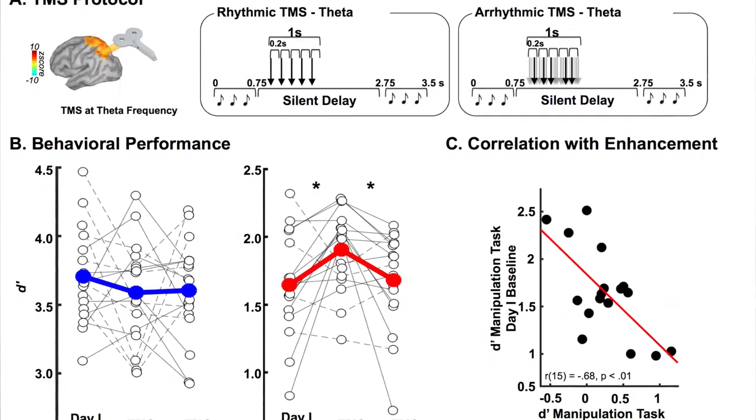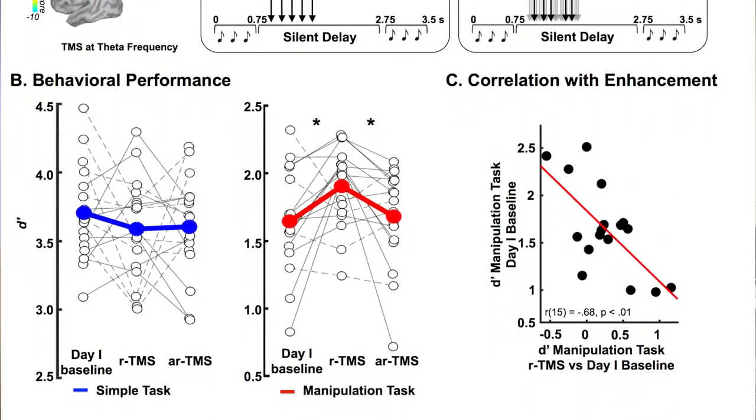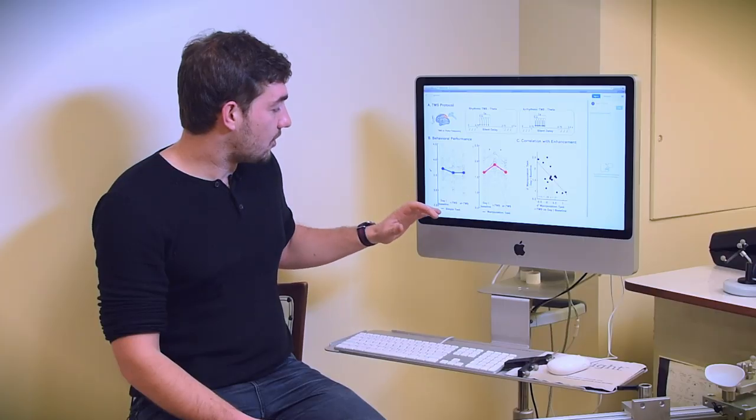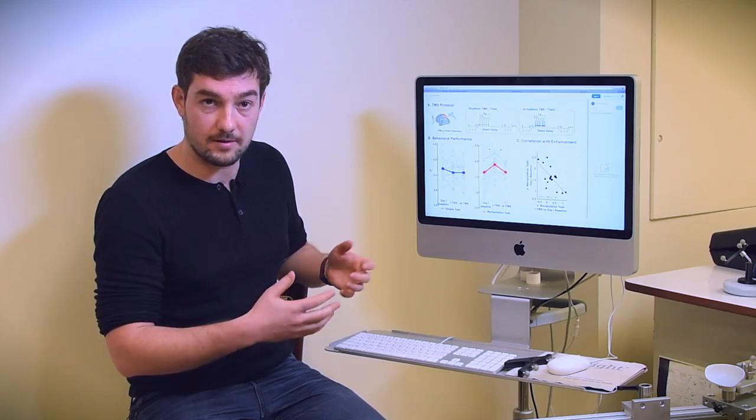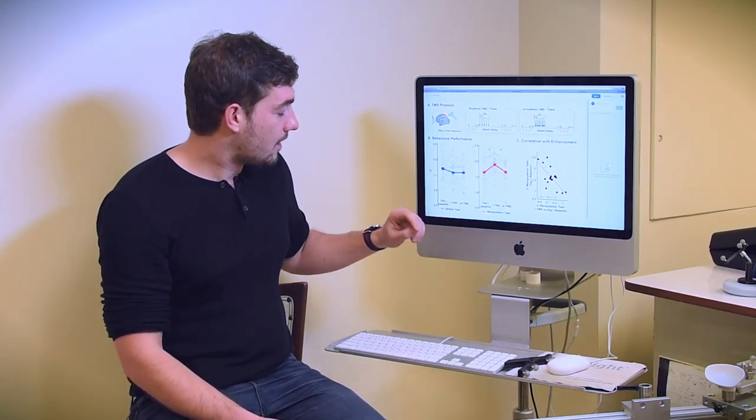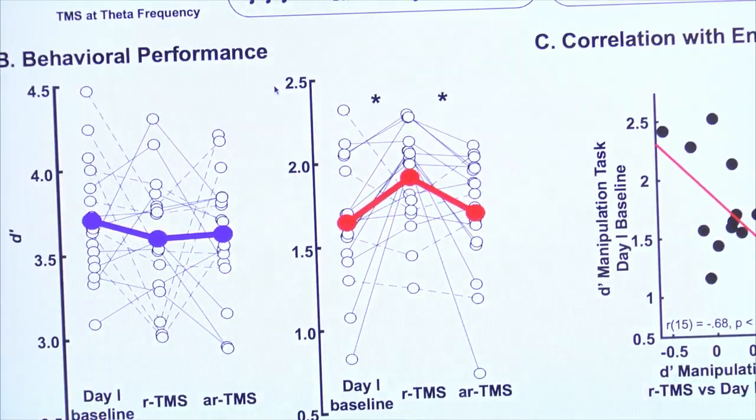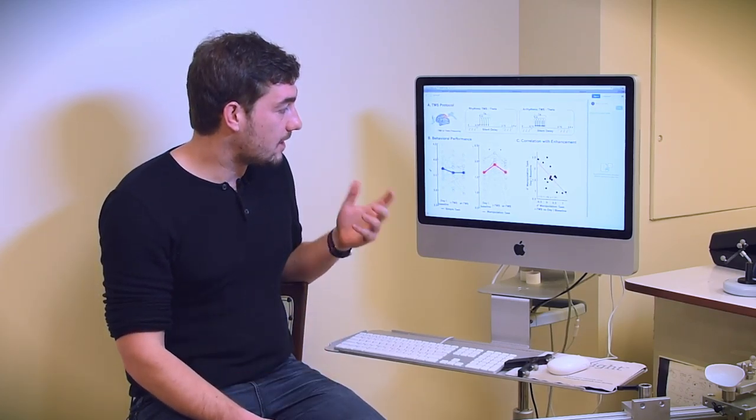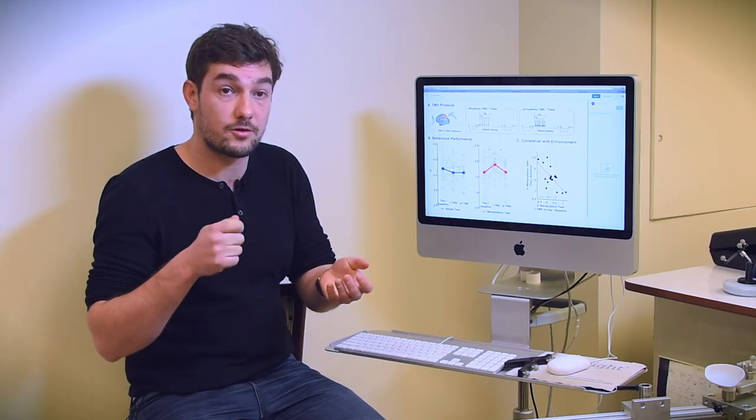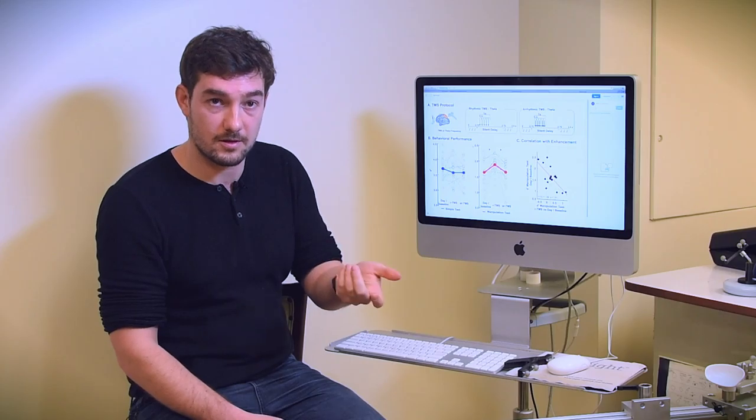In terms of behavior, we made the causal link between the theta oscillations and behavior with the stimulation by showing that the stimulation, rhythmic or arrhythmic, did not change anything for the simple task, where you don't have to manipulate information. But for the manipulation task, the benefit in terms of performance was observed mainly for the rhythmic stimulation, and only for this one. So it makes a link between ongoing oscillations that are already present, and if we are able to entrain those oscillations, we are going to specifically boost participants' performance on the given task.